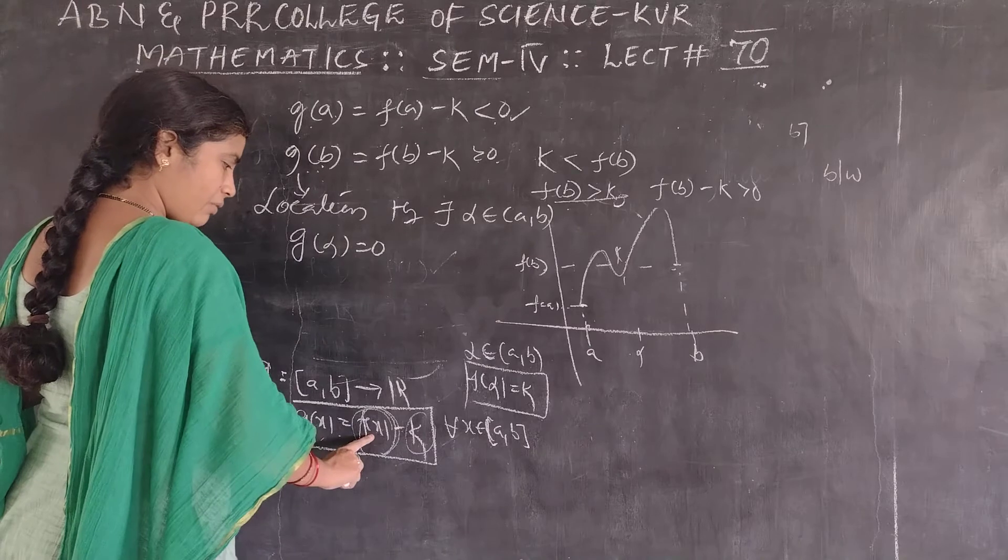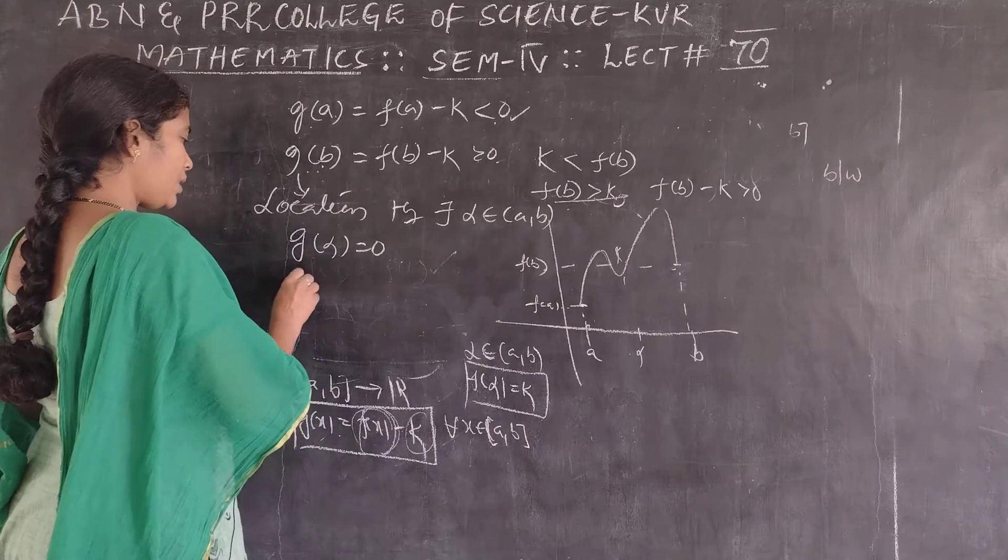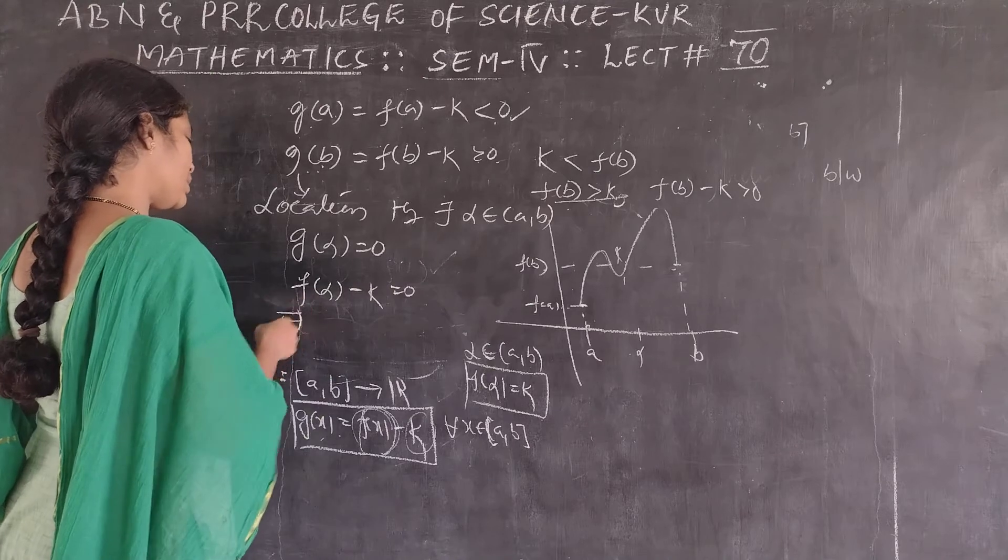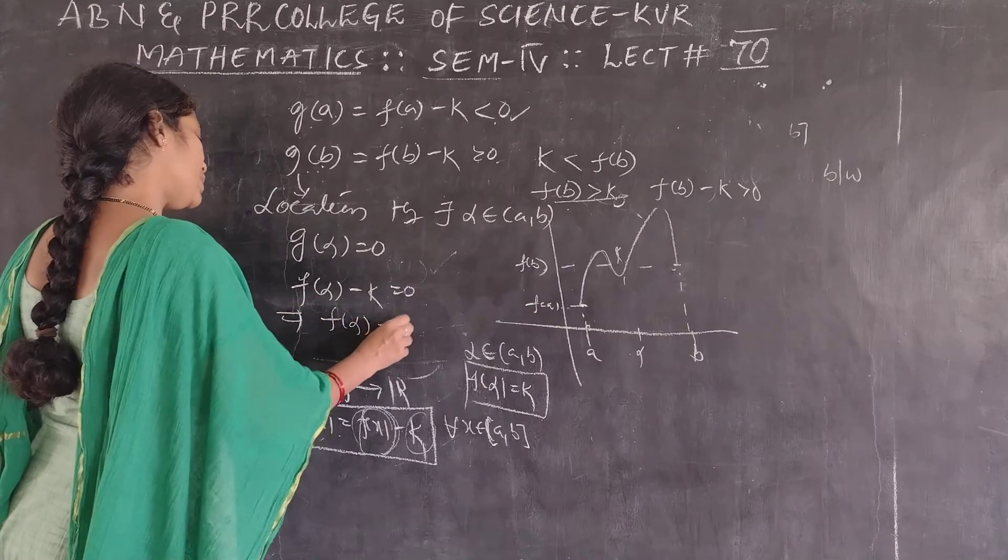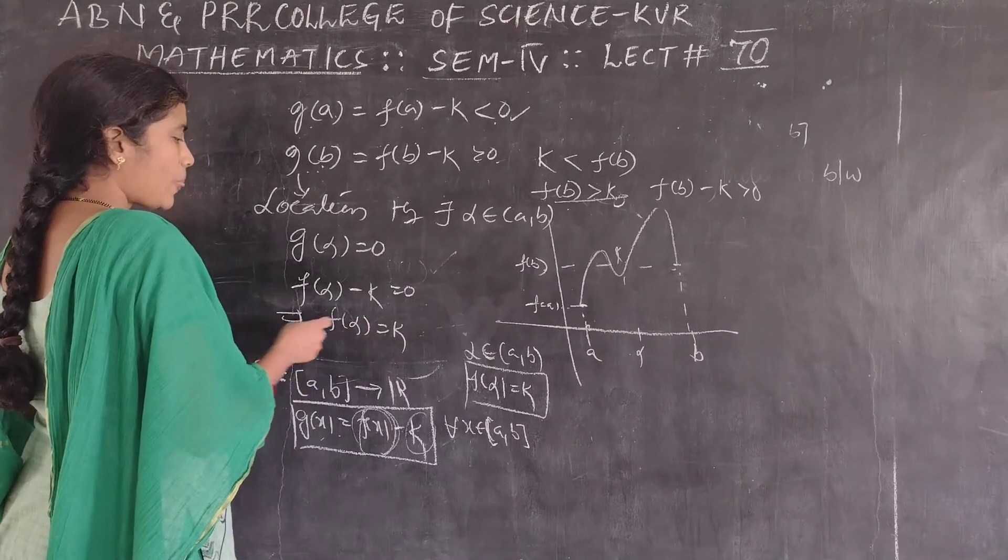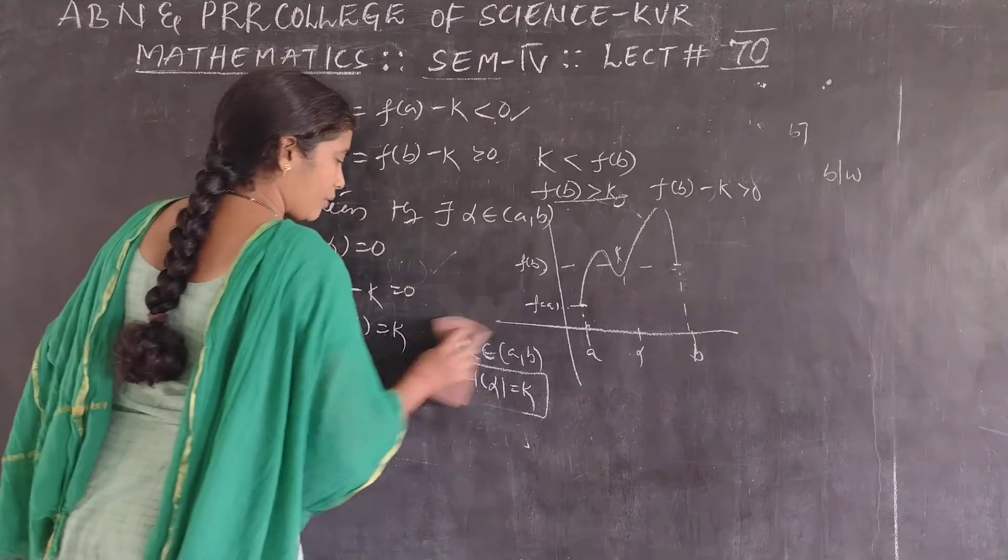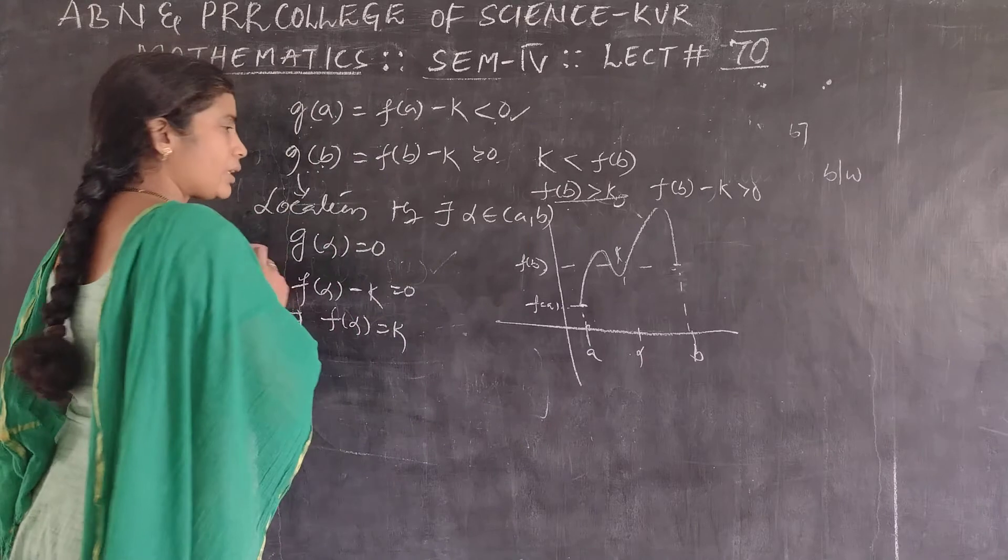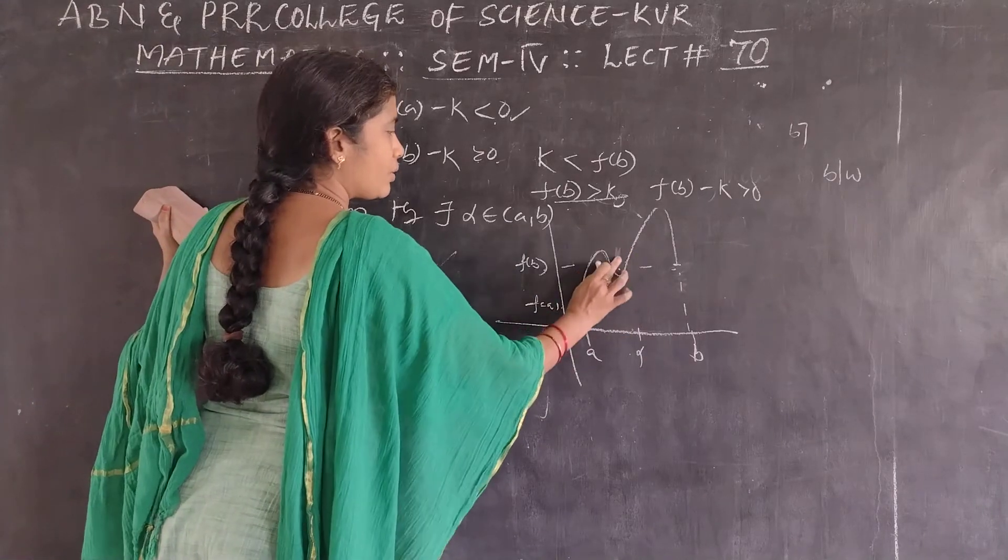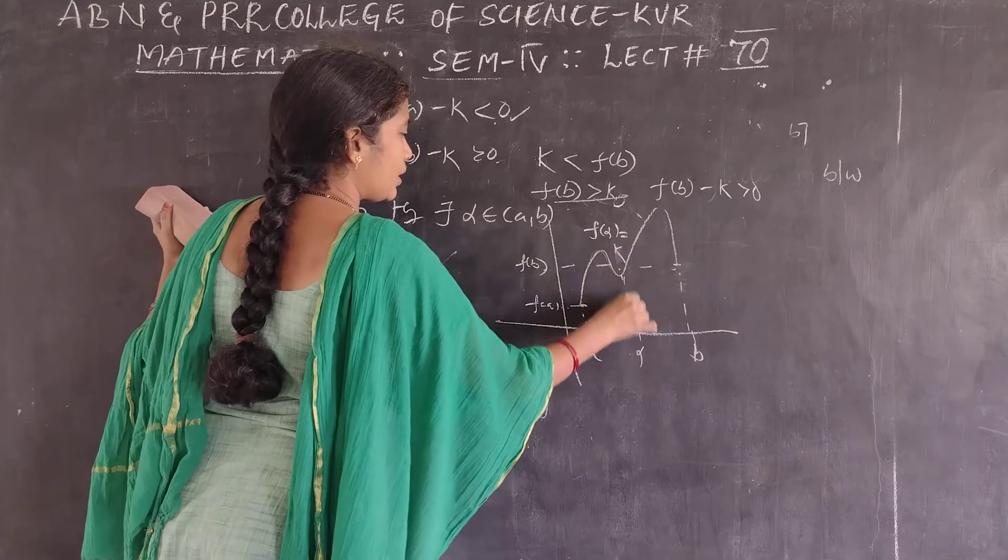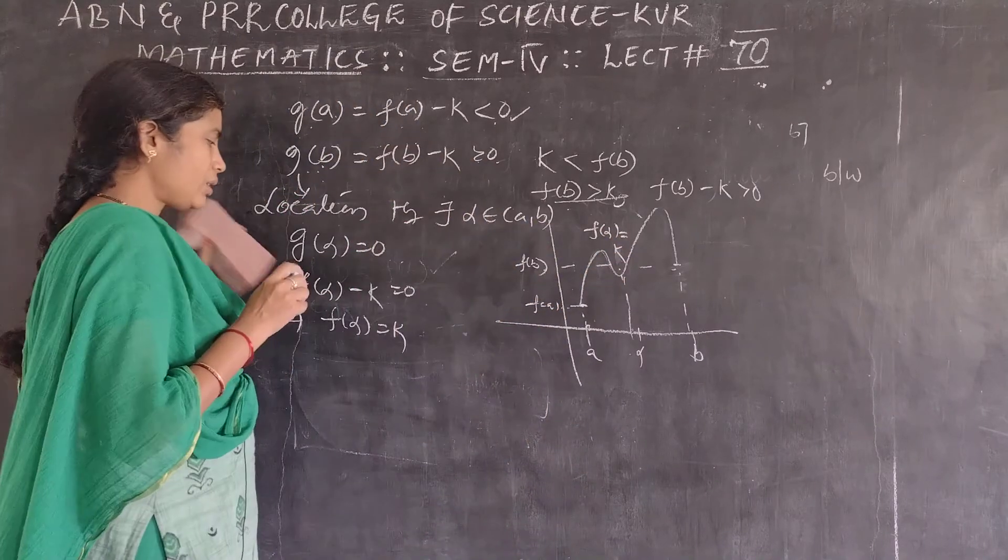Since g of x is f of x minus k, g at alpha is f at alpha minus k equals 0. That means f at alpha is equal to k. Alpha exists in AB such that f at alpha equals k, which means f takes every value in between f of a and f of b.